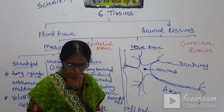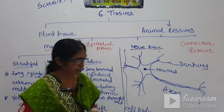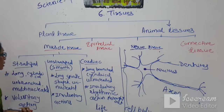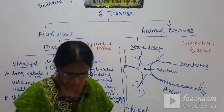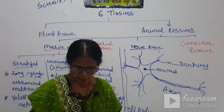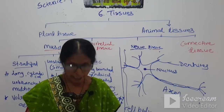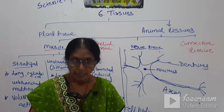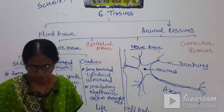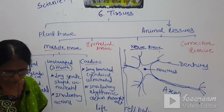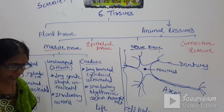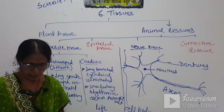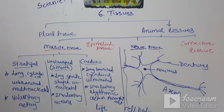Now we will learn about the last type of animal tissues — muscle tissue. The figures are given on page number 77. There are mainly three types: striated muscle, smooth muscle, and cardiac muscle. First, striated muscle — it is also called stratified or striated muscle. The characteristics: they are long and cylindrical.